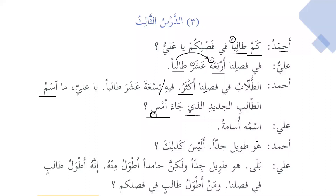Aliyun: ismahu Usamah — his name is Usamah. Now we can see that in the word ismun, the hamzah is hamzatul wasl; that's why there is no harakah on it. But we know that whenever we use the word ismun, we have to read it with kasra. Ismahu Usamah. Usamah is also mamnu' min as-sarf because it is a masculine name and it ends with ta marbuta.